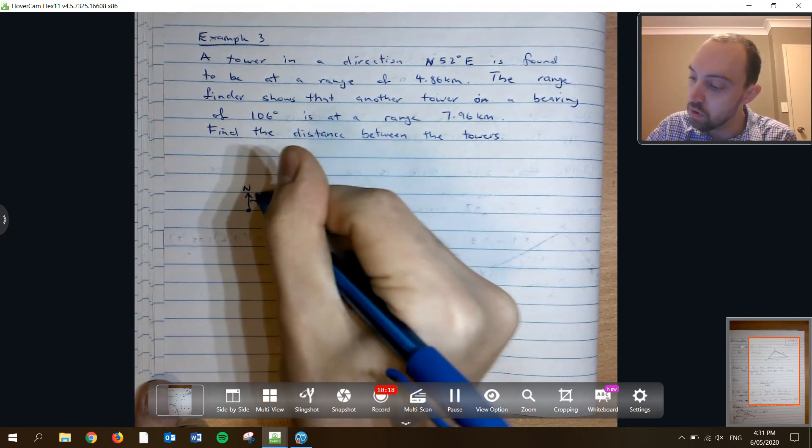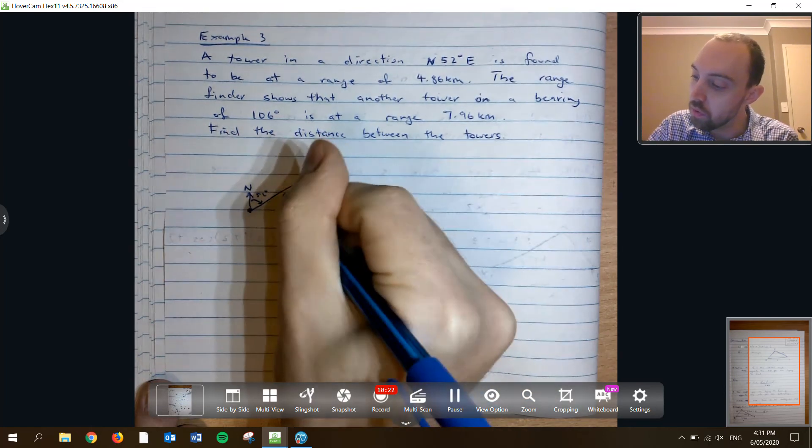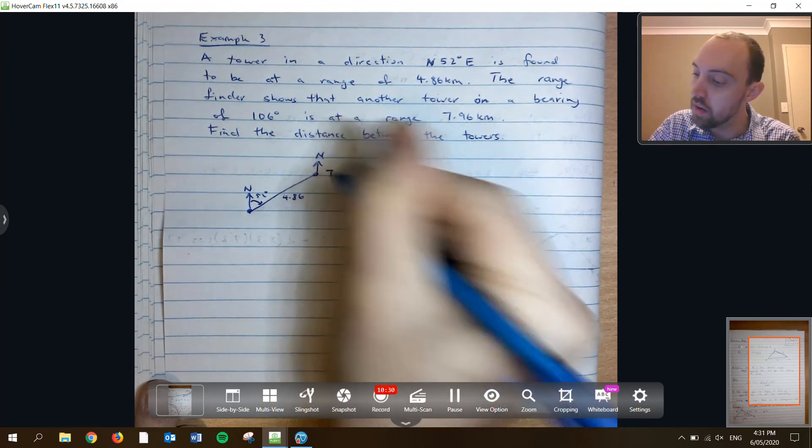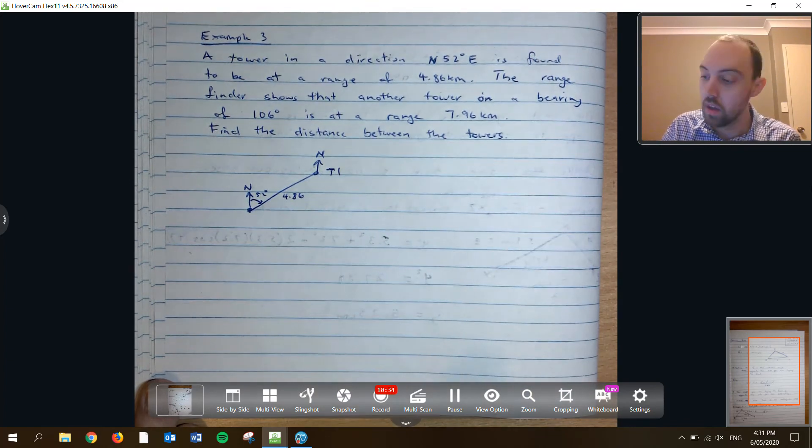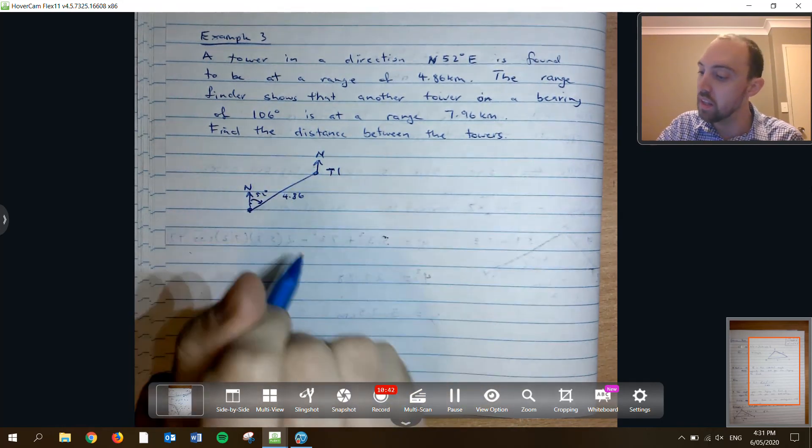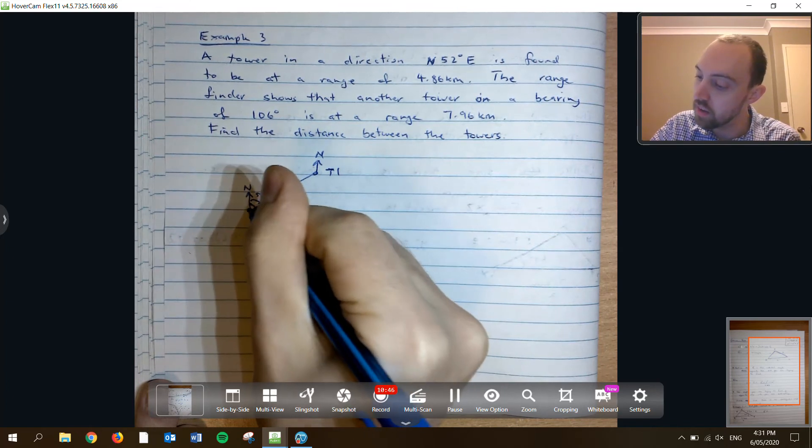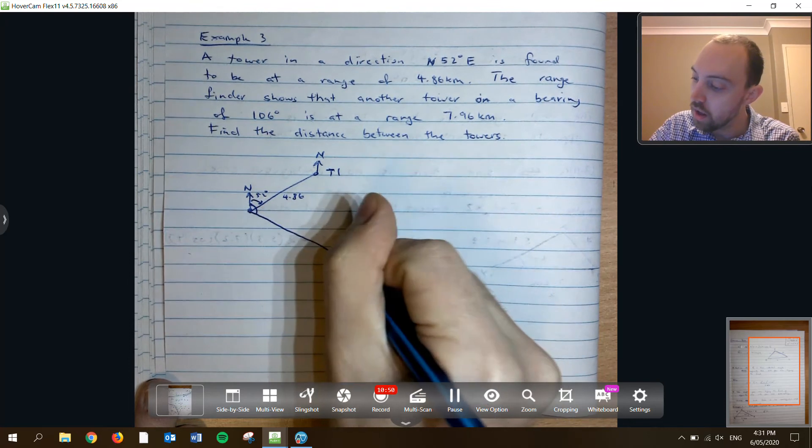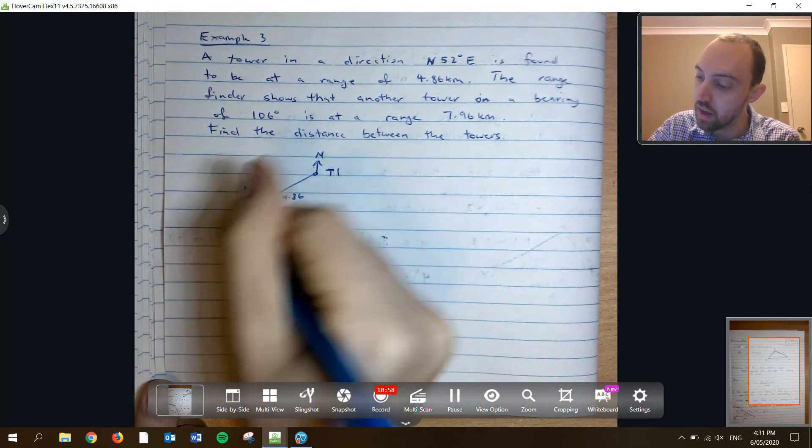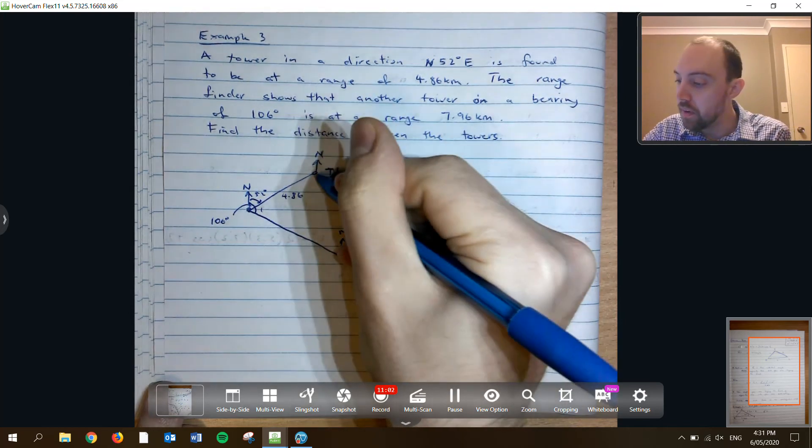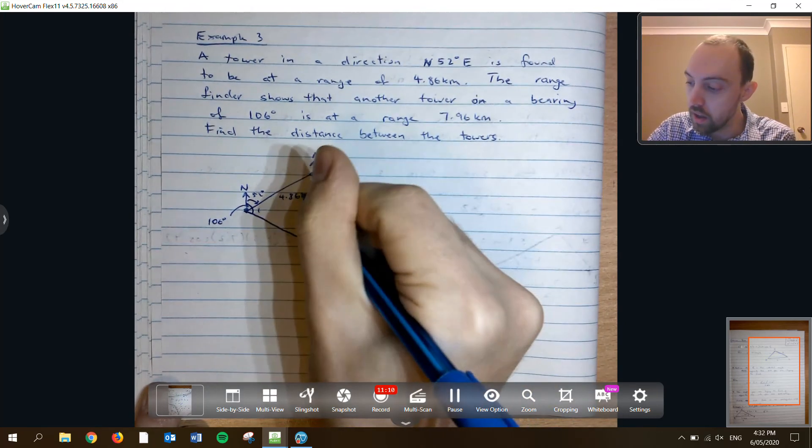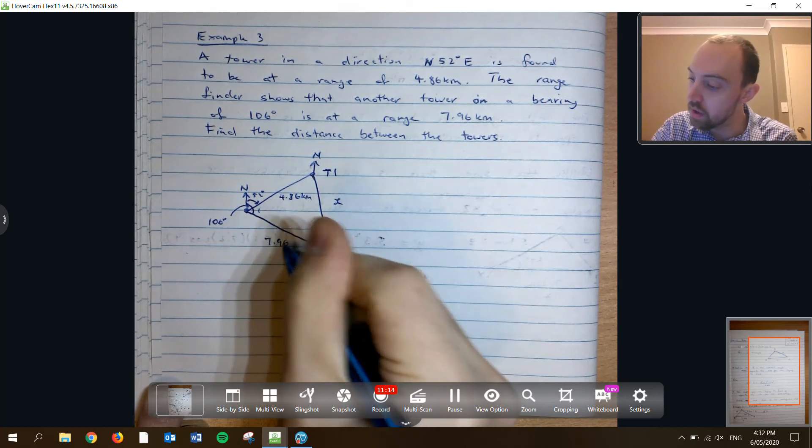So where are our two towers according to our diagram? Well, we've got north 52 degrees. And this goes for 4.86 kilometers. So always labeling north. This is my first tower. And then 106 degrees going from north. This is 52 degrees in the easterly direction. So that's fine. 106, little bit past 90, looks something like this. Always marking north. Tower 2. And that was our 106 degree angle. And we want to find the distance between our two towers. X. So it looks something like that. And I need to label in 7.96 kilometers at the bottom there.